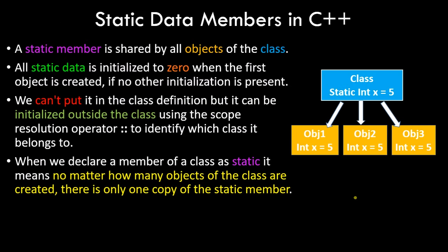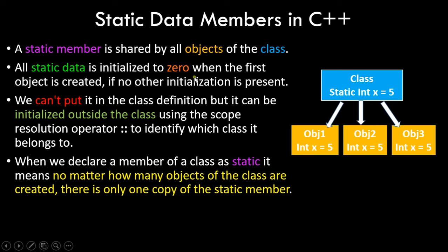Let's get started. We'll first go through a little bit of theory on static data members and then jump into the programming part. A static data member is shared by all objects of the class. All static data is initialized to zero when the first object is created, if no other initialization is present.